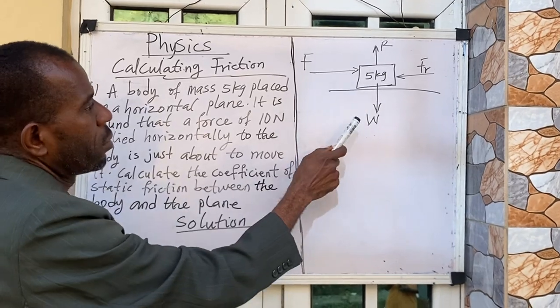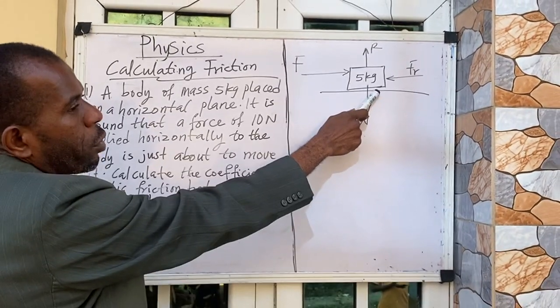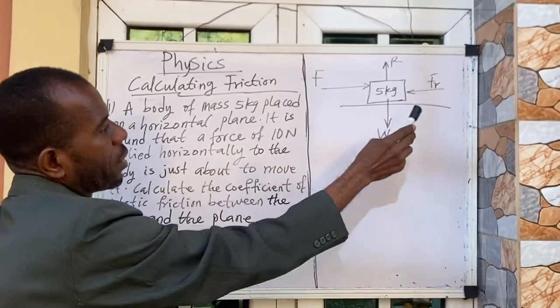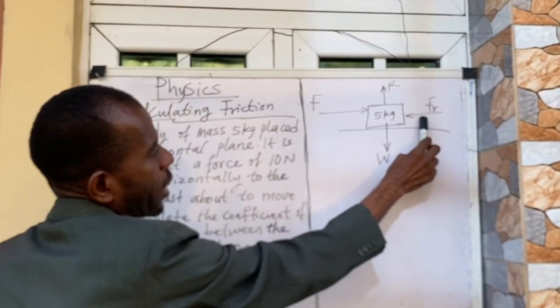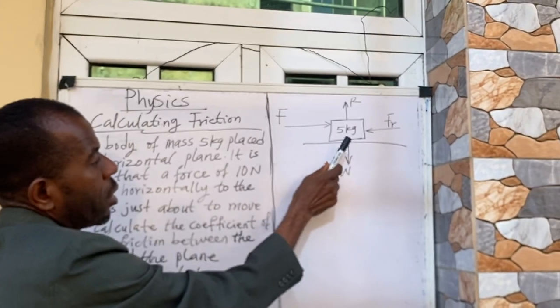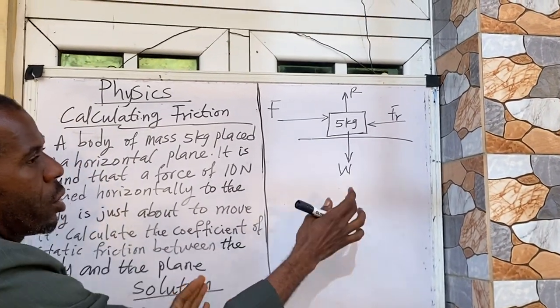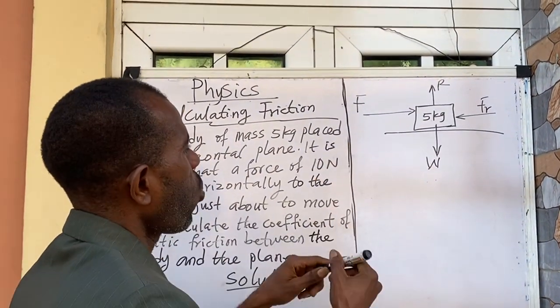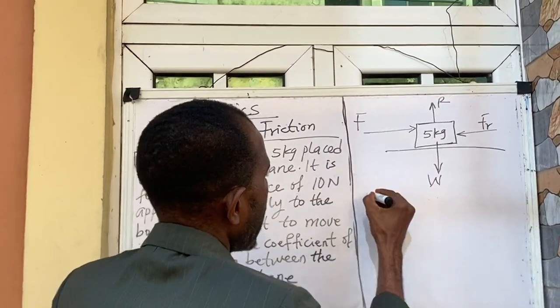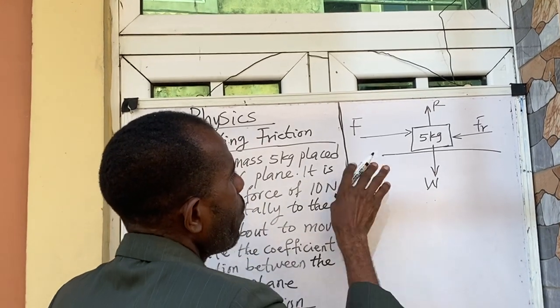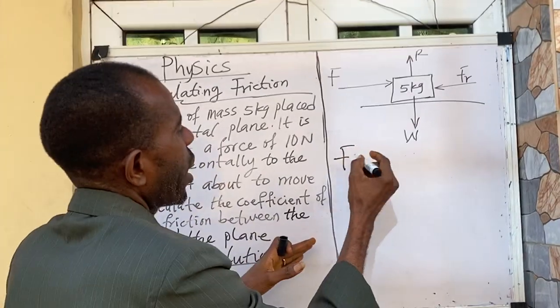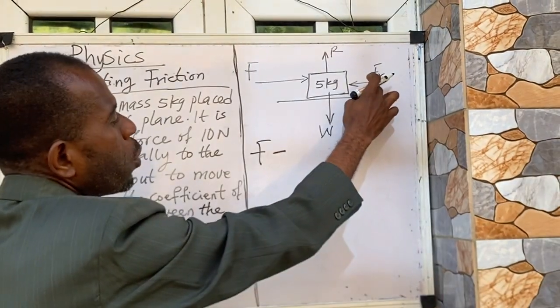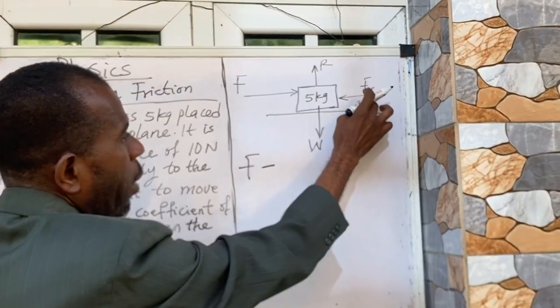This is the body that was placed on a plane surface horizontally. This is the force that is applied and this Fr here is the force that is resisting the movement. This body here is stationary on this surface, it is at rest. Now when this force is about to move it to make it to be in motion, so we are going to have F minus Fr because this force must be overcome before the body can be moved.